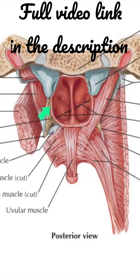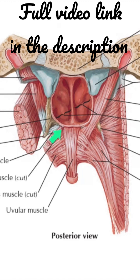The muscle is triangular in shape and converges below to form a round tendon. The tendon turns medially around the lateral side of the pterygoid hamulus. This is the pterygoid hamulus — around its lateral side the tendon turns medially, and it is separated from the pterygoid hamulus.